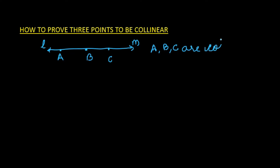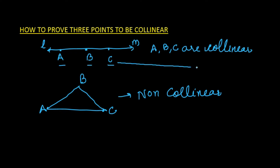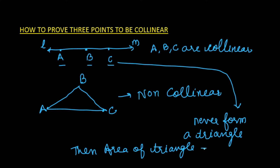What happens if three points are not collinear? If they are not collinear, they will surely form a triangle. So any three collinear points can never form a triangle, and if they can't form a triangle then the area of that triangle should be 0. So if three points lie on one line, they are collinear, and the area of the triangle formed by them will be 0.